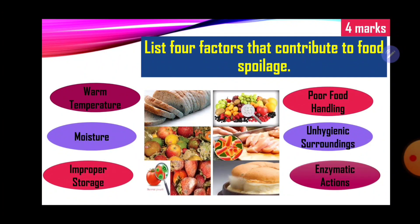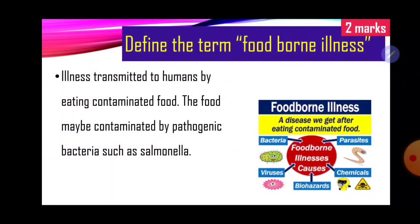Now let's take things into a little more detail. The first question says list four factors that contribute to food spoilage. We have six here but you're just required to list any four. They are: warm temperature, moisture, improper storage, poor food handling, unhygienic surroundings, and enzymatic actions. Any four listed is the ideal response.